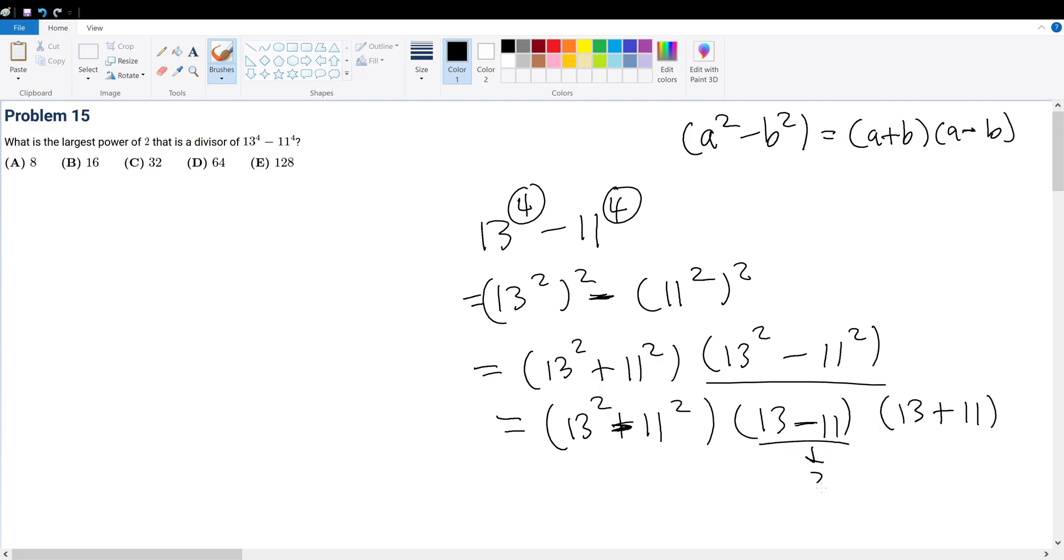Now, this gives 2, and this gives 24. Now, 24 is equal to 4 times 6, that's 2 squared times 2 times 3. So this becomes 2 to the 3rd times 3.